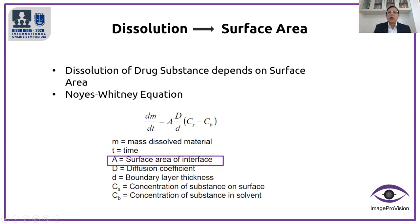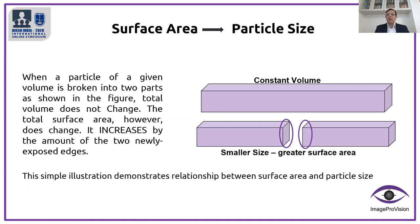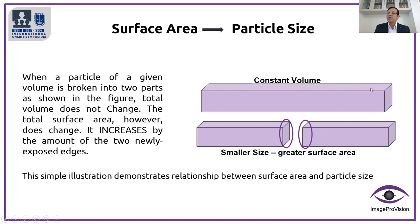Now let us look at how surface area is related to particle size and particle shape. Here is a simple illustration: take one particle with a constant volume or constant mass. If I break it down into two halves, its mass or volume remains the same but the surface area increases because of the two newly exposed surfaces that are created. So all else is the same, but because of these newly created surfaces the surface area of this entire mass has increased.